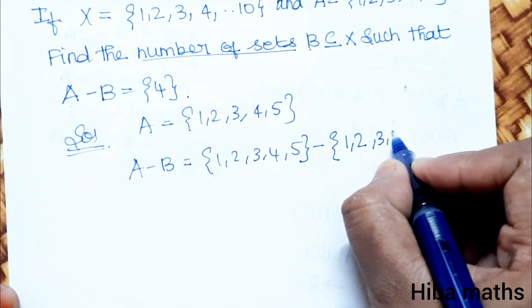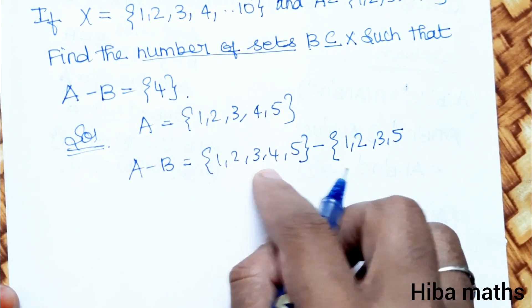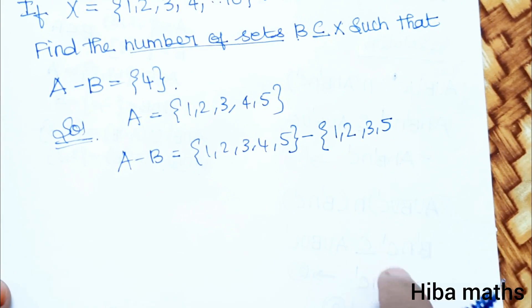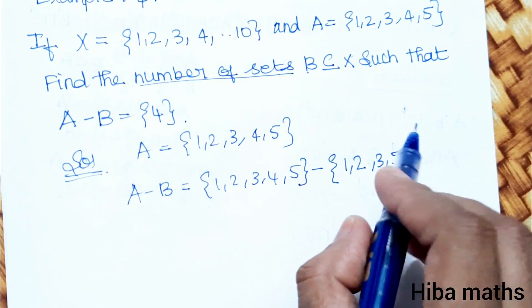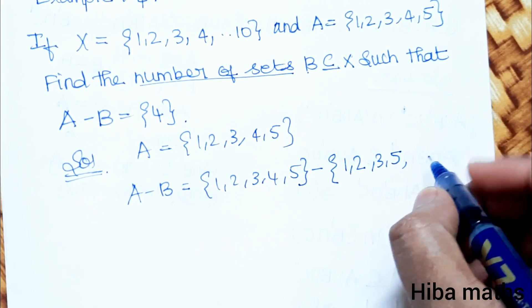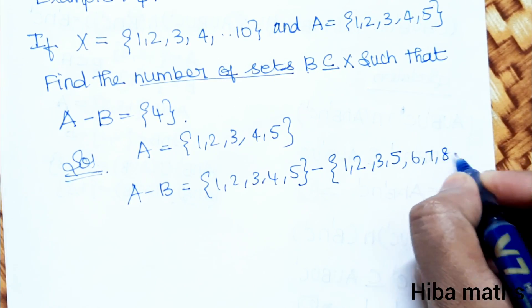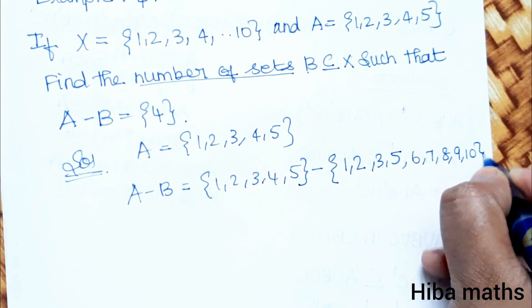Now, A minus B - A set first minus B set. Now A and B minus to get 4: {1, 2, 3, 4, 5}. Now we can cancel 4. But no, X value is 1 to 10. That means the remaining values are 6, 7, 8, 9, 10.